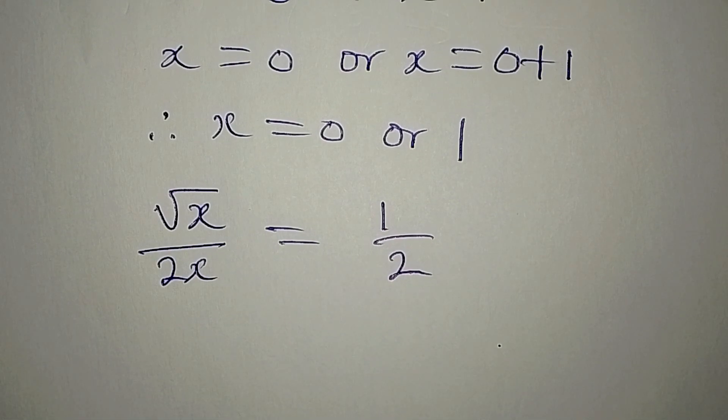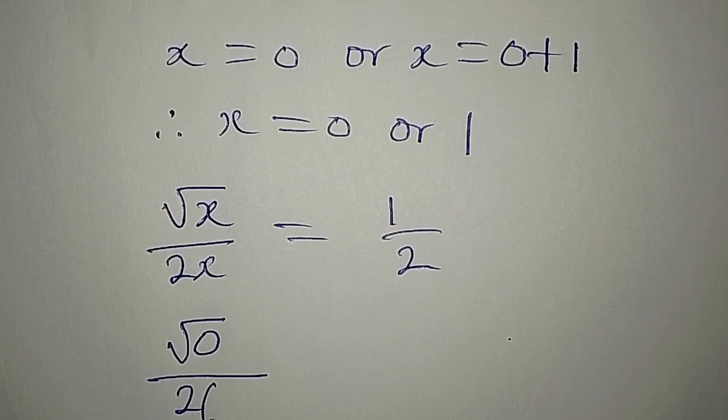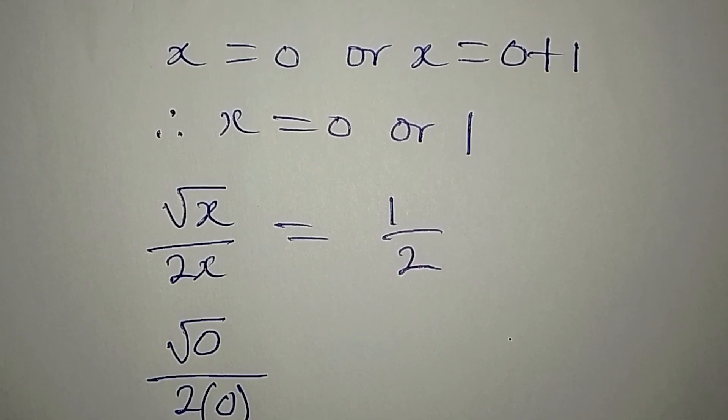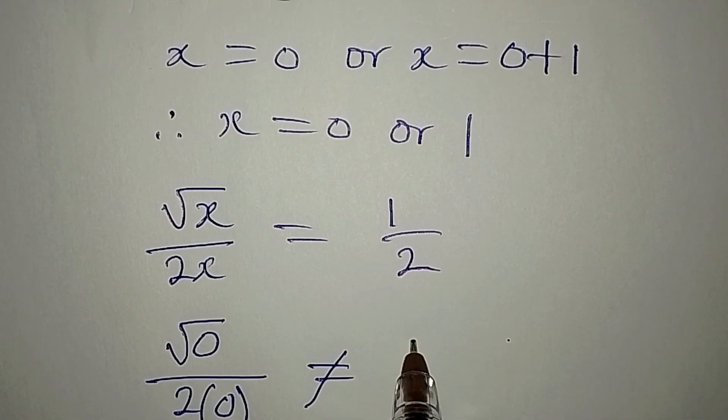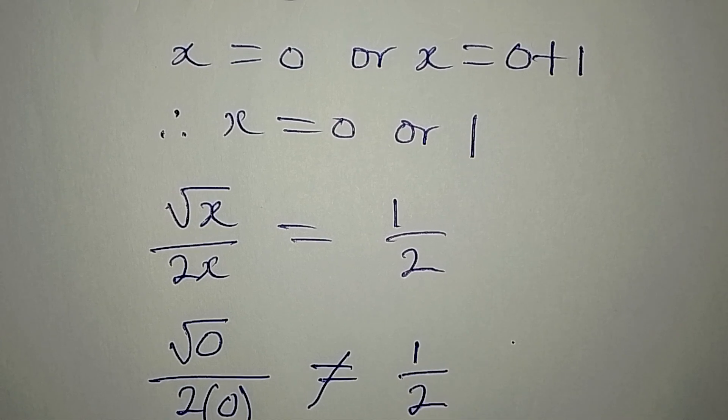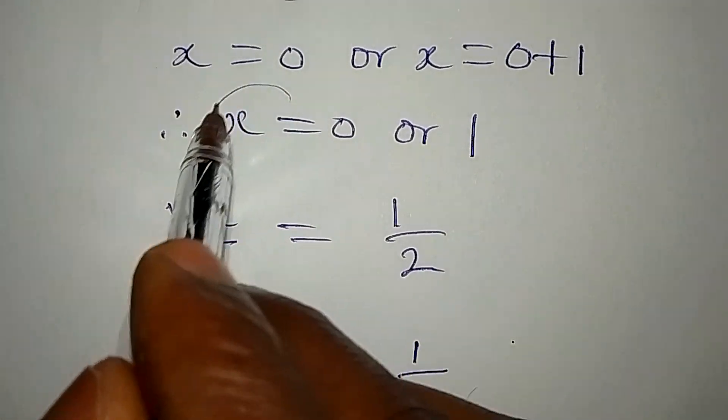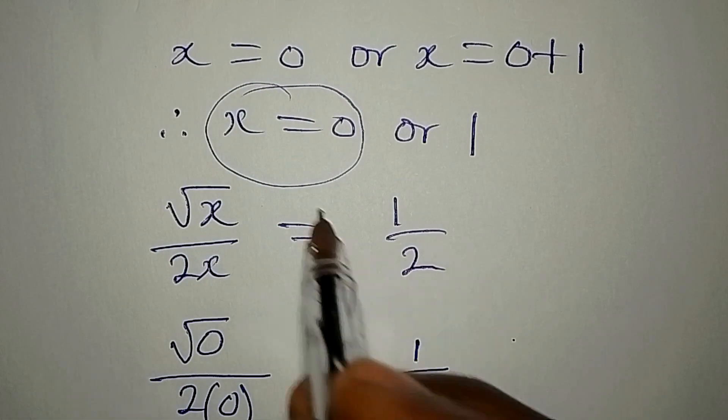So if I put in the value of x as 0, I'm going to have square root of 0 over 2 times 0, and this can never give 1 over 2. So this means that this value of x is not satisfying.